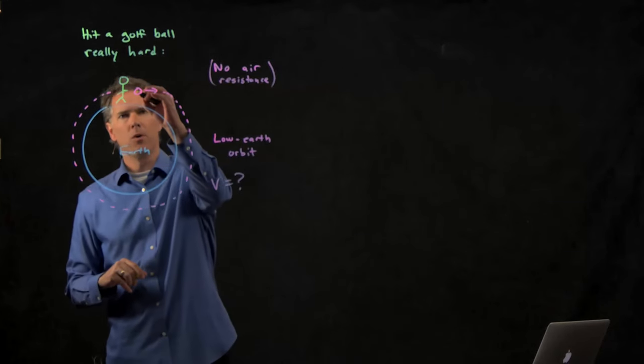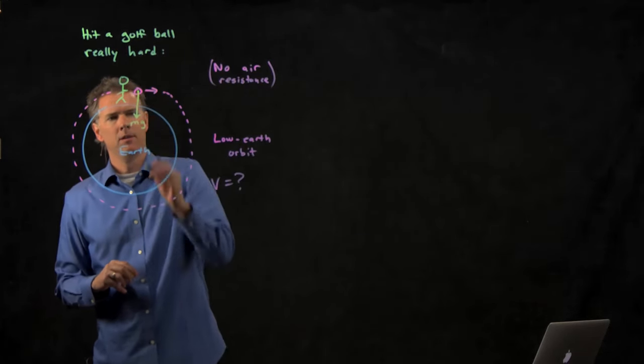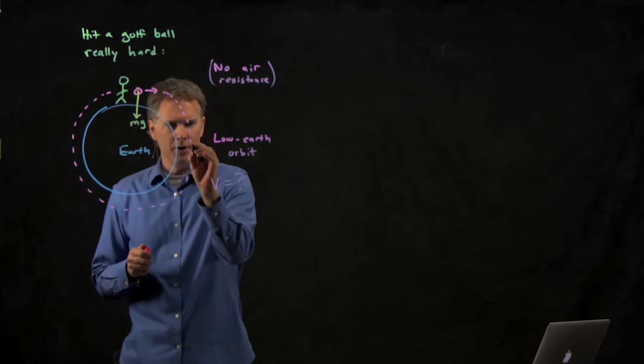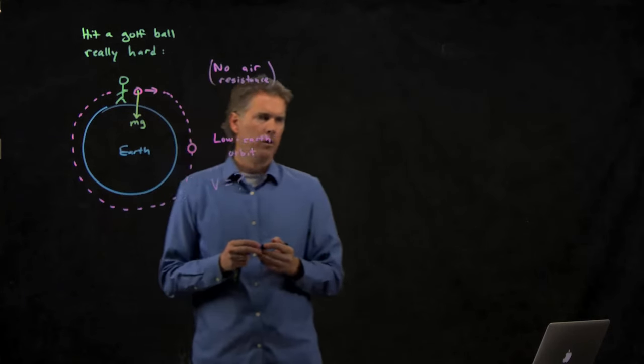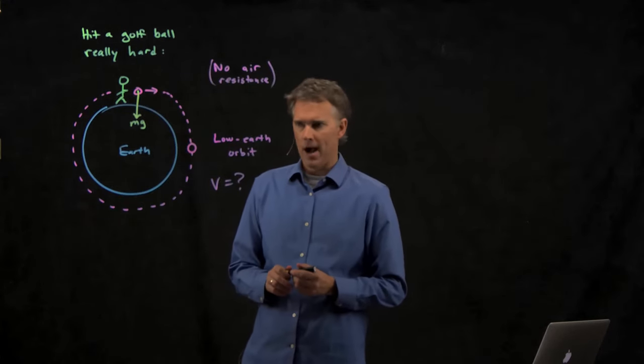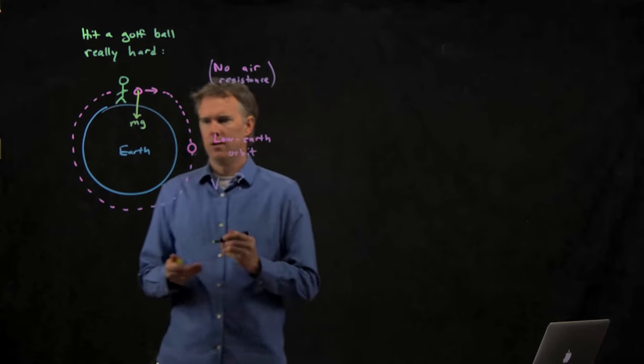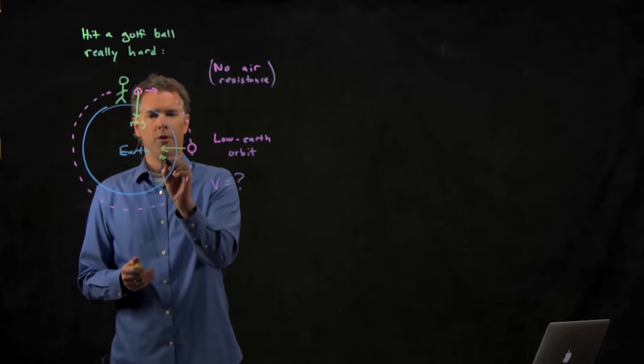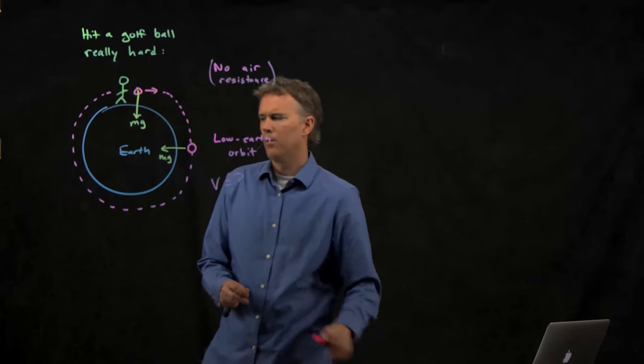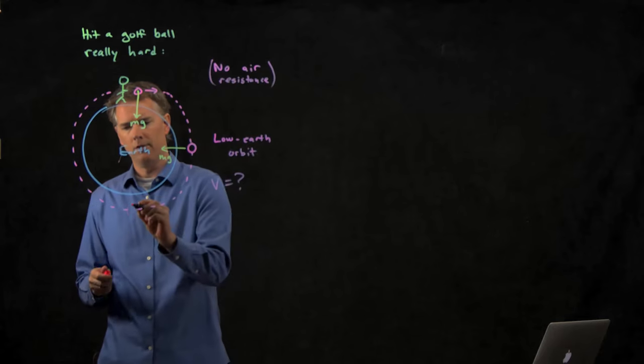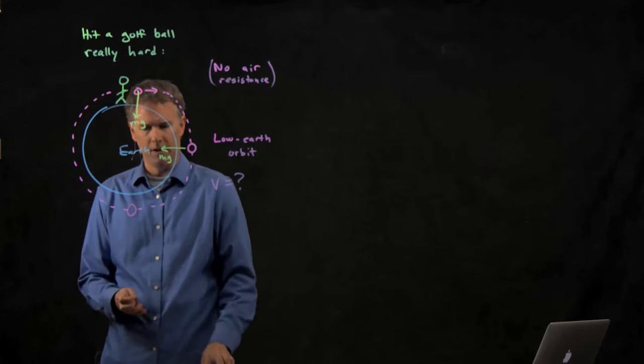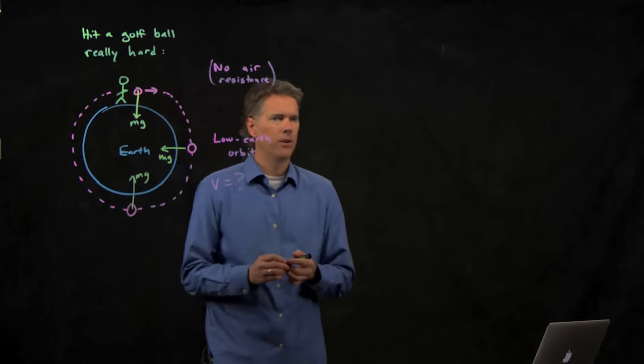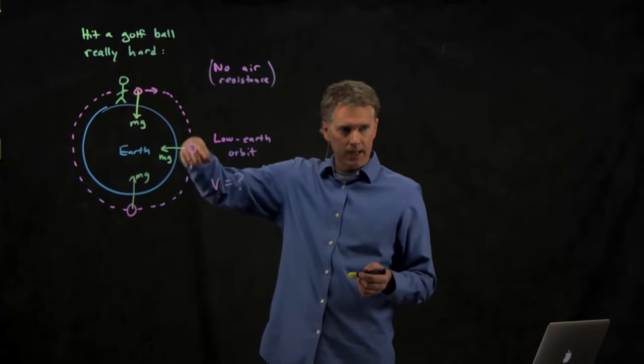Gravity is of course down at that point there. When the golf ball gets over here, what forces are acting on it? Gravity. Which way? Not down anymore. Towards the center of the earth. When it gets over here, it is of course acting towards the center of the earth. Everywhere it goes around, it's always acting towards the center of the earth. And so that gravity keeps it in its orbit.